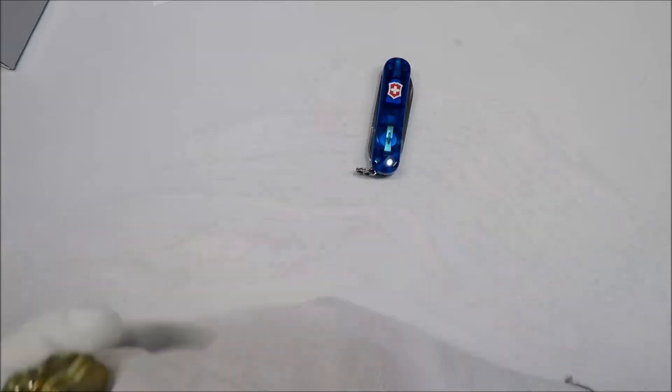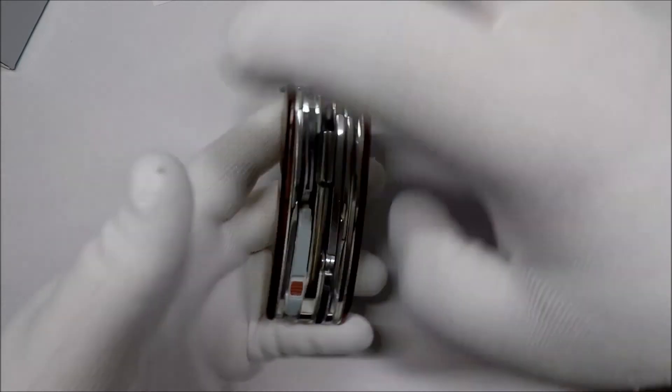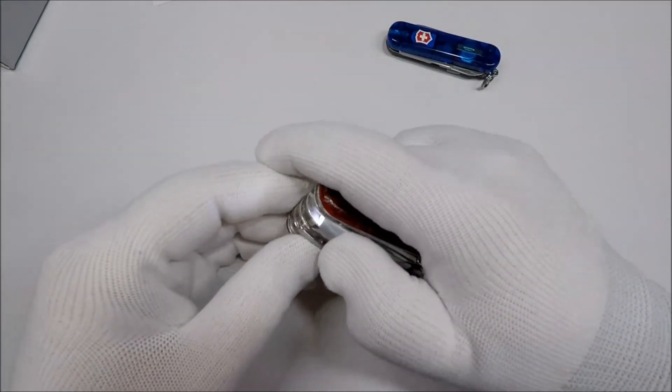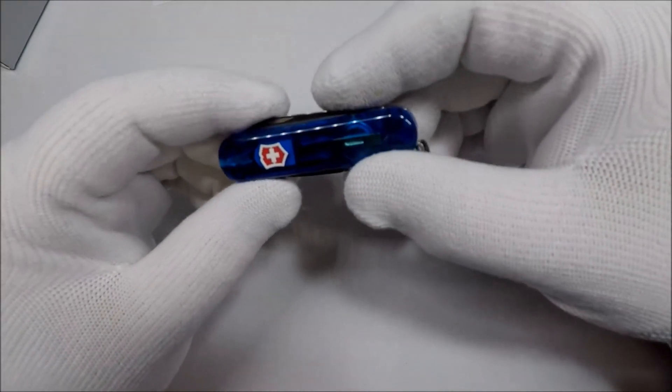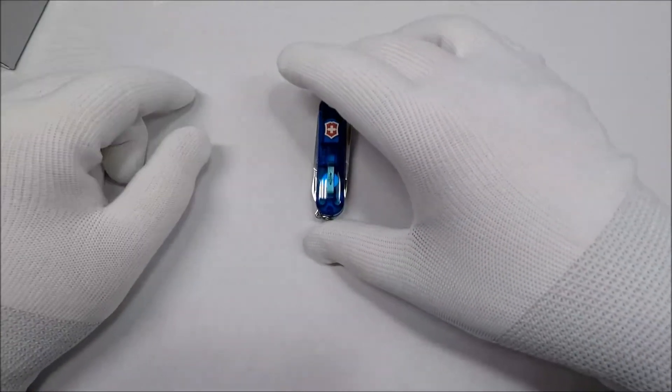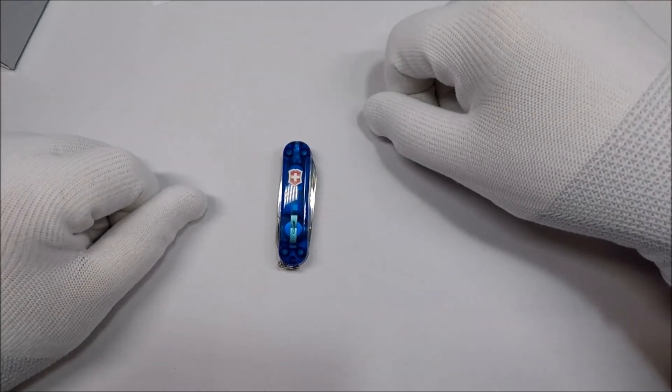And I also carry a Cybertool light, and it has a light, so I don't really lose the backup light there. But if you're just going to carry one little thing on your keychain and then forget about it, I feel like the signature light is the way to go. And I'll include links in the description where you can find this.